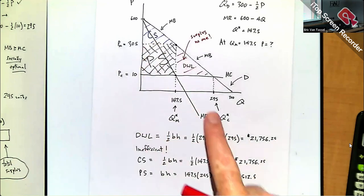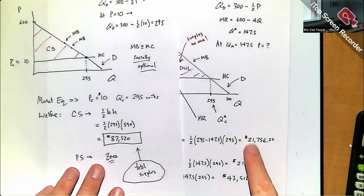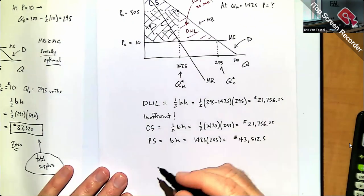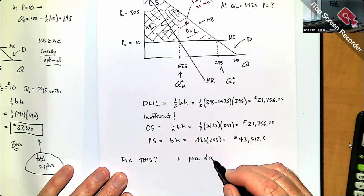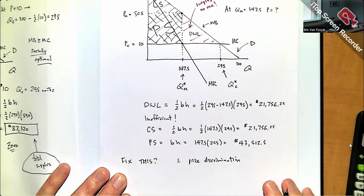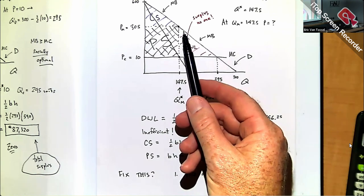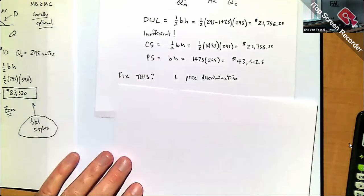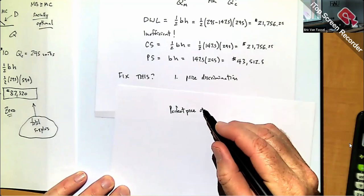If you add up consumer surplus, producer surplus, and deadweight loss, you should get back to approximately 87,320 — the total surplus from the competitive benchmark. One way to get around the deadweight loss is price discrimination. If the firm can sell the same product at different prices, the monopolist is willing to increase production.